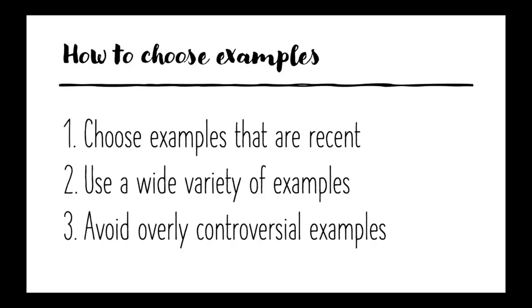Finally, do not use examples which are overly controversial, as these rarely help to prove your point. In a motion such as 'this house would toughen drug laws,' the war on drugs could be used as an example by Proposition, but this would be unwise as it is still hotly debated on whether or not the war on drugs was a success. Therefore, you should abstain from using controversial examples and use those that are clean cut instead.